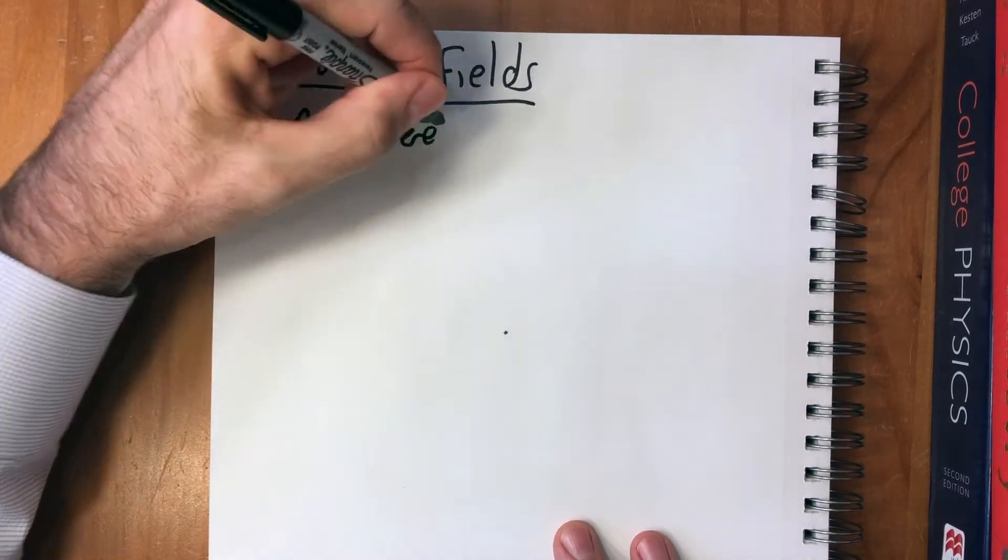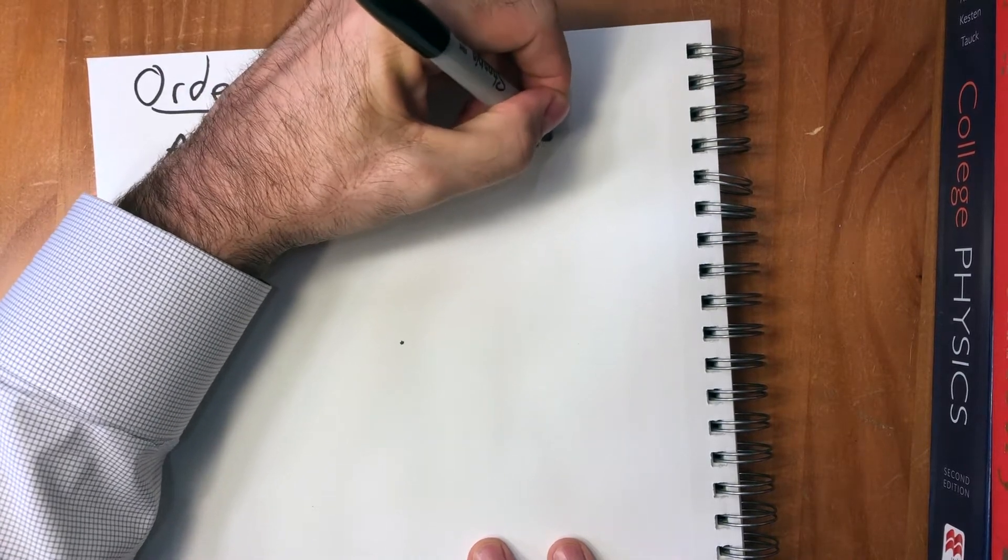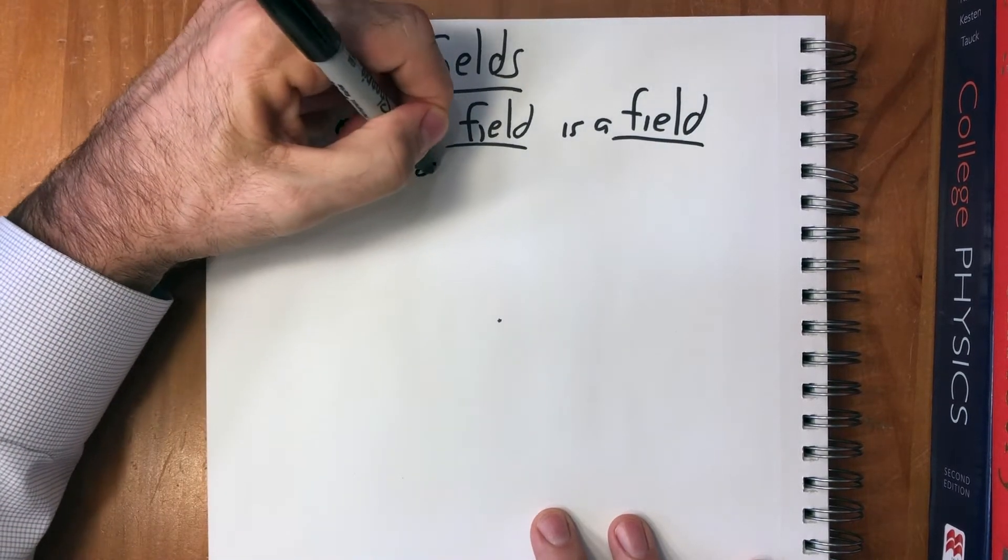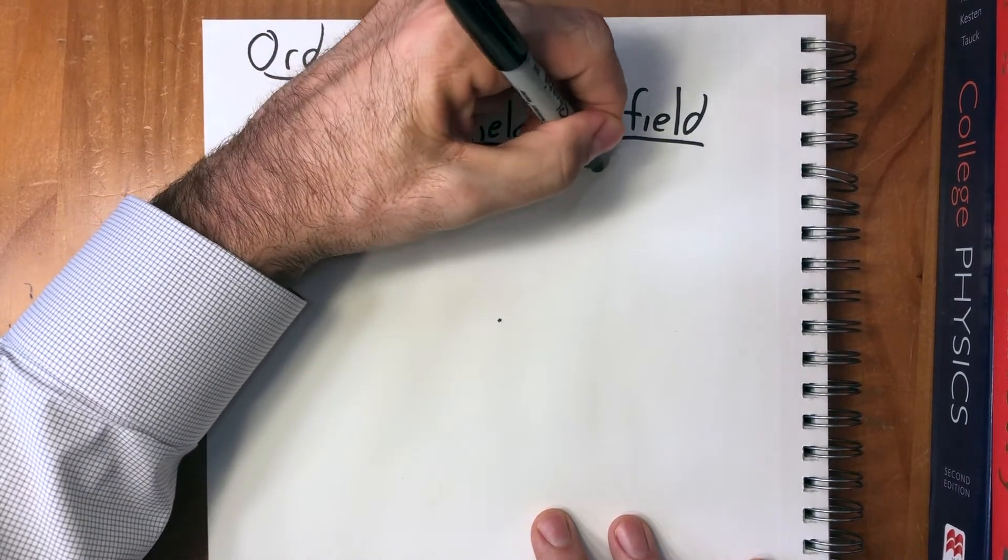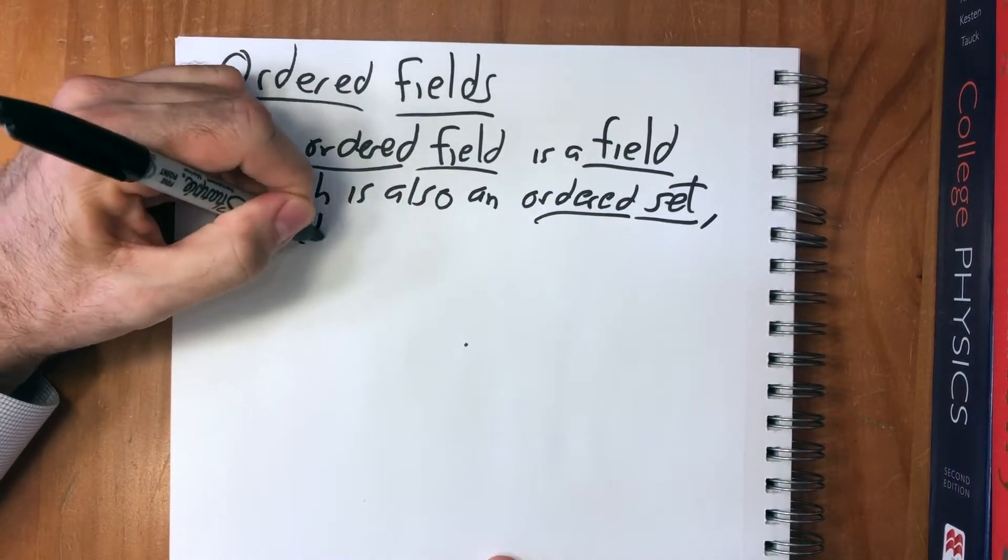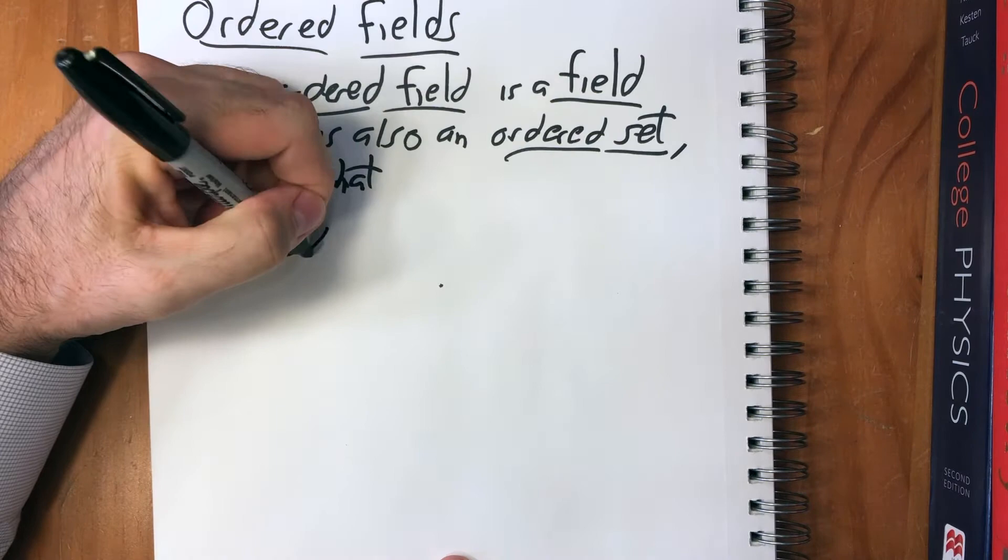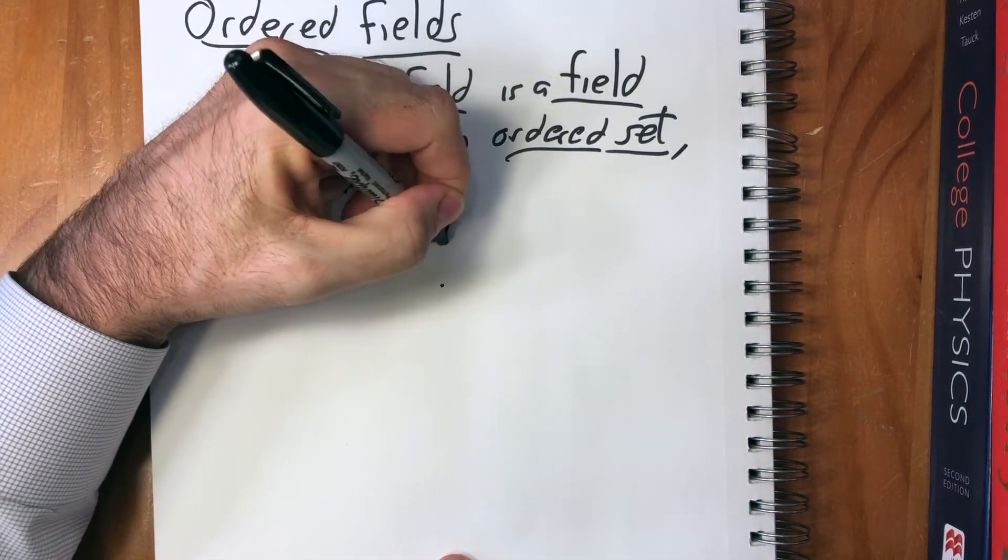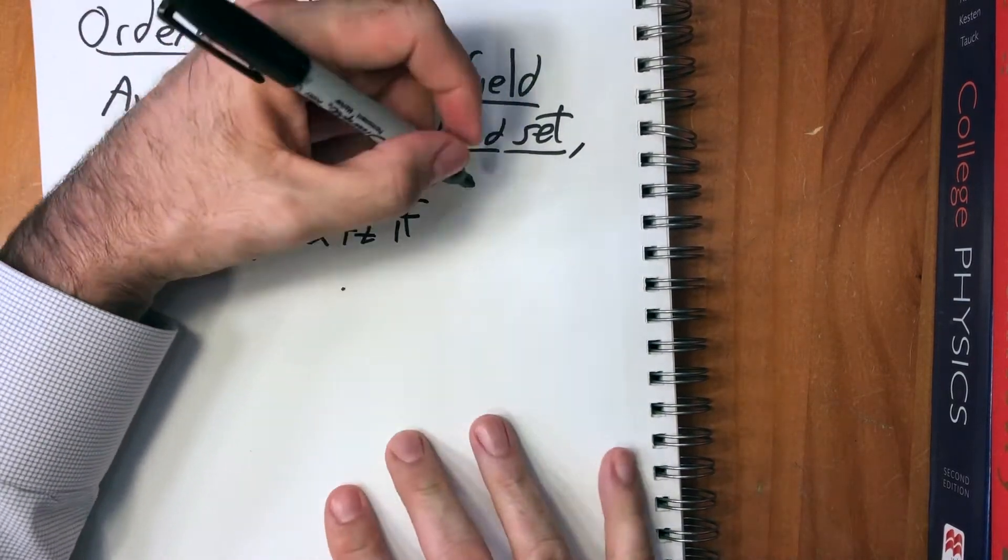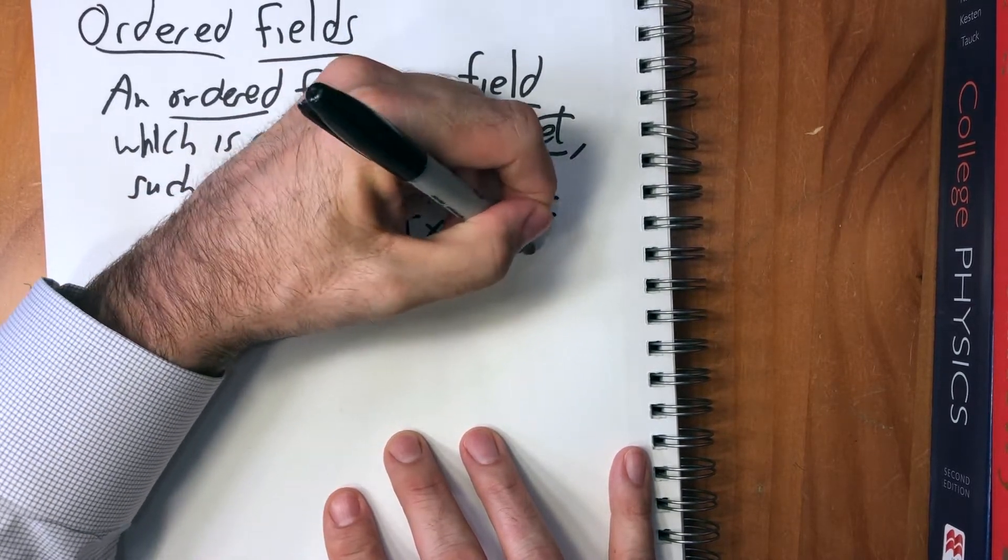An ordered field is a field which is also an ordered set such that one: x plus y is less than x plus z if x, y, z are elements of F and y is less than z.